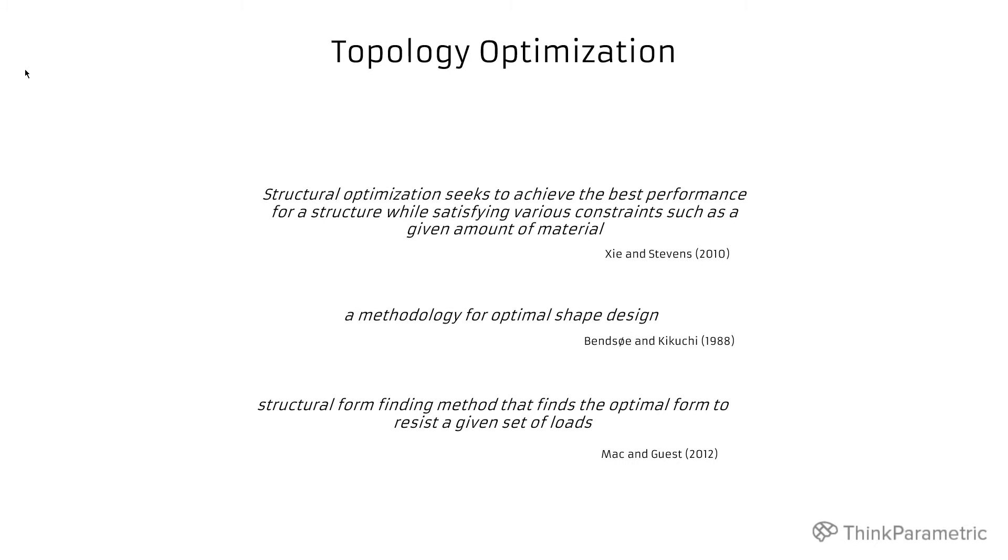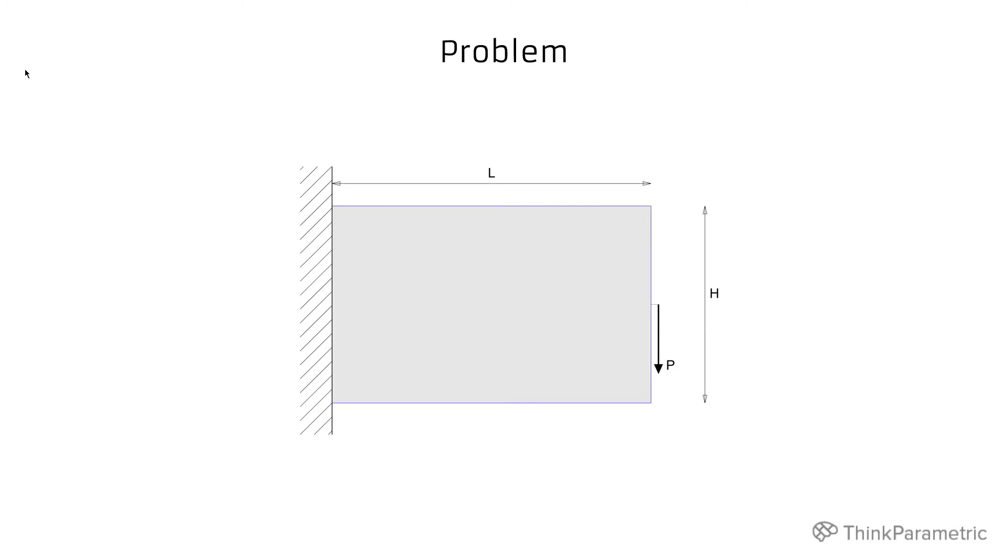So how does it work in practice? Let's have a look to a simple problem. We would like to design a structure that resists the given load P. And our design domain is specified in this rectangle with specific length and height. So our structure should appear within this rectangle and should be able to resist the load P.